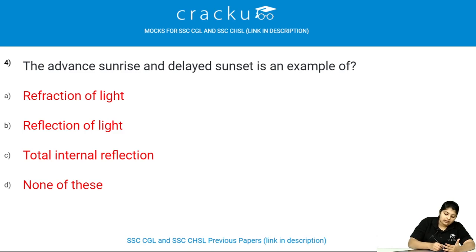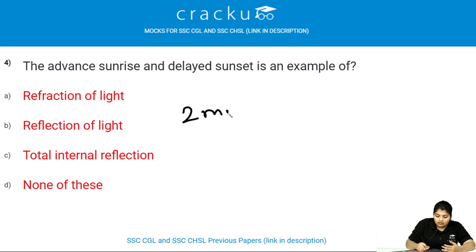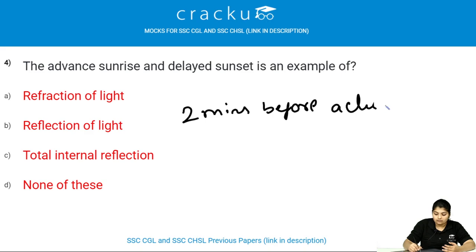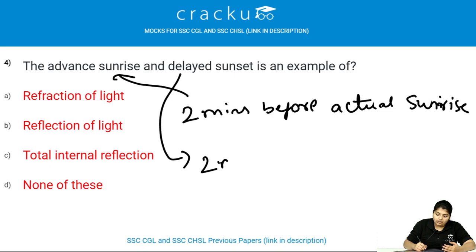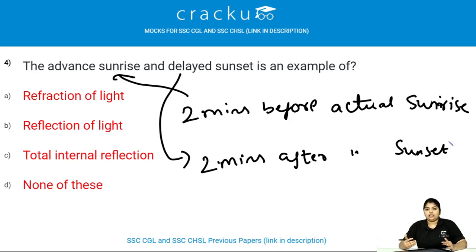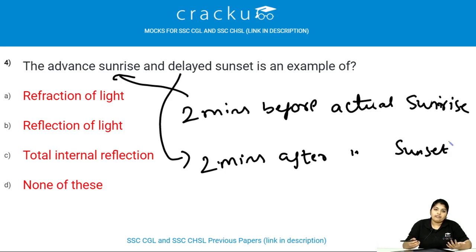Advanced sunrise means if the Sun appears two minutes before the actual sunrise, it is called advanced sunrise. Delayed sunset means if the Sun appears two minutes after the actual sunset, it is called delayed sunset. This phenomenon occurs due to the atmospheric refraction of light.